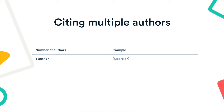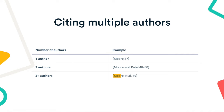But what if there's more than one author? If a source has two authors, name both. If a source has more than two authors, name only the first author, followed by et al., which means 'and others.'